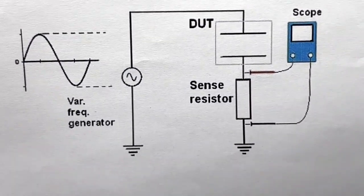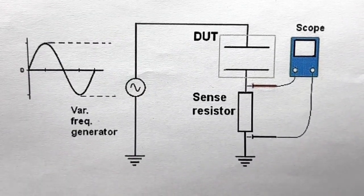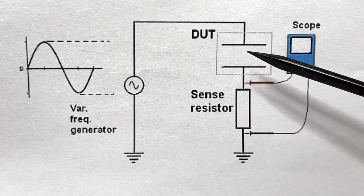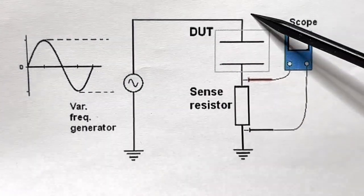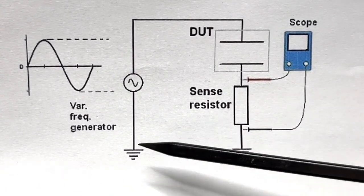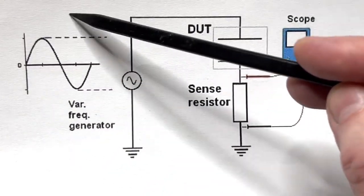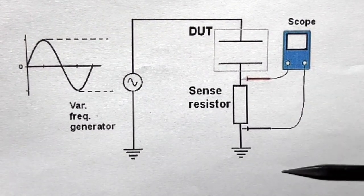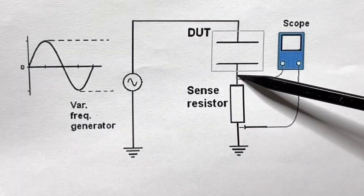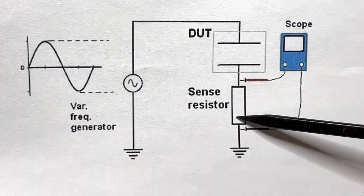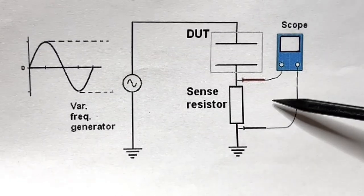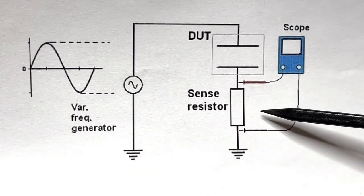Here is the setup you need. The DUT — device under test — it looks like a capacitor but it can be a capacitor and an inductor. You need a frequency generator with a variable frequency. You connect the primary of the transformer, and in series you put a resistor — I use a 100 ohm resistor — and you measure the voltage across the resistor with a scope.